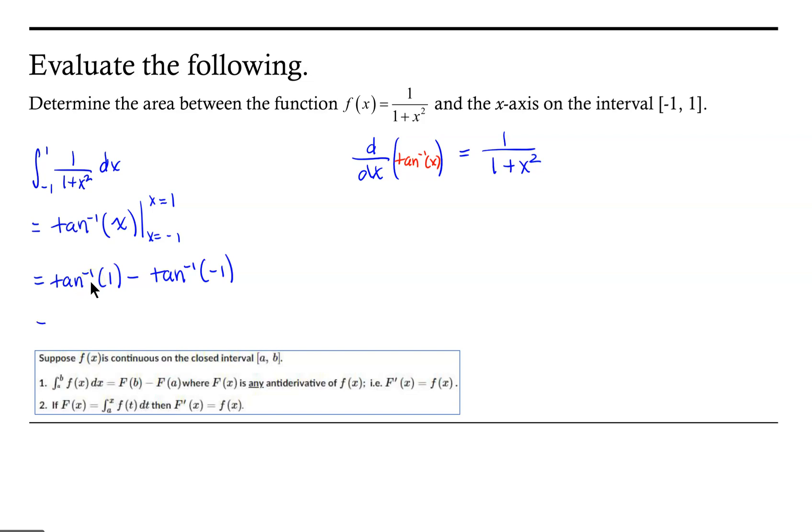and now we want an angle that has a tangent of negative 1. And just as a reminder, the domain for the tangent function is negative pi over 2 to pi over 2.